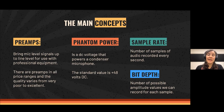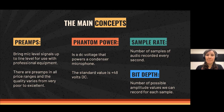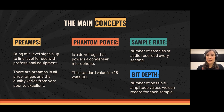Then we have phantom power — a DC voltage that powers a condenser microphone. Condenser microphones need this phantom power in order to work. The standard value is 48 volts DC. Sample rate is the number of samples of audio recorded every second, and bit depth is the number of possible amplitude values we can record for each sample. We will develop these concepts more in a moment.